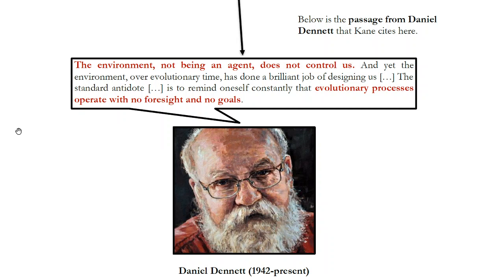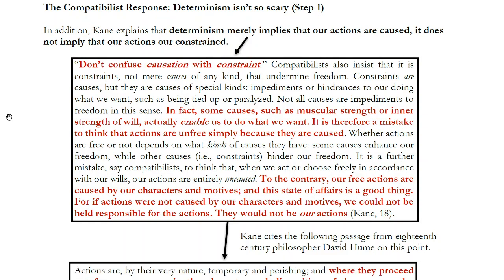The first thing compatibilists say to make determinism less scary is that determinism does not mean we're being manipulated by the universe. A last very important point: Cain says don't confuse causation with constraint. You might say, if determinism is true, all my actions are caused, they couldn't have happened differently — I feel very constrained, limited in my future. But to be caused doesn't necessarily mean you're constrained. Cain explains: some causes actually give us powers or abilities, such as muscular strength or inner strength of will, which actually enable us to do what we want. It is therefore a mistake to think that actions are unfree simply because they are caused.